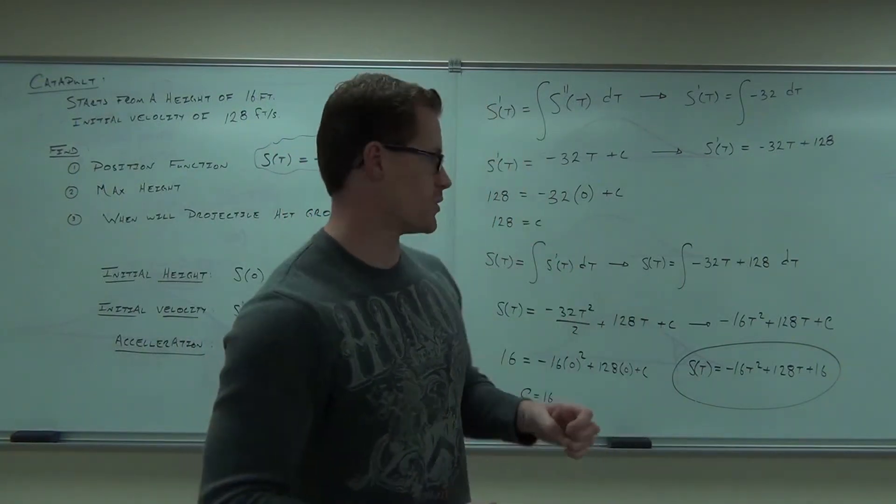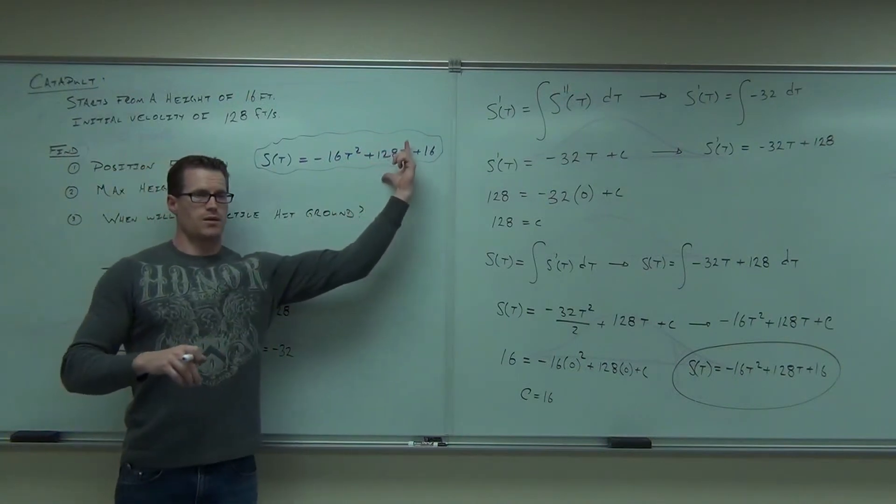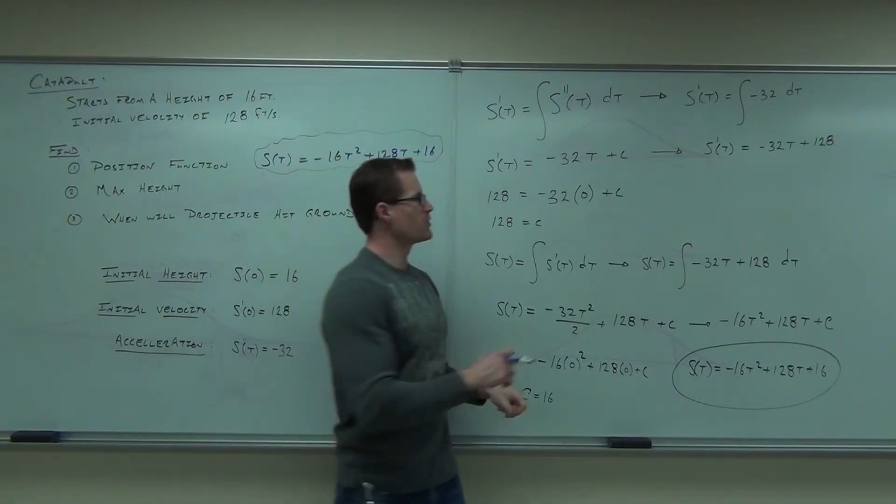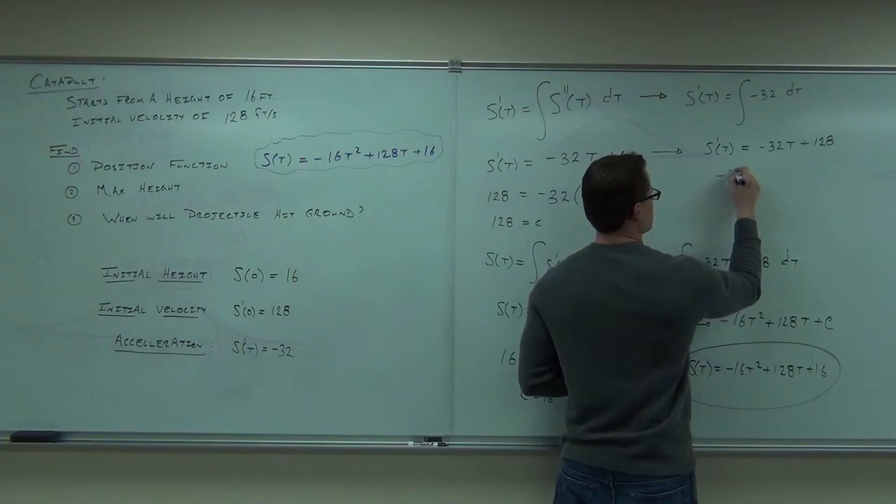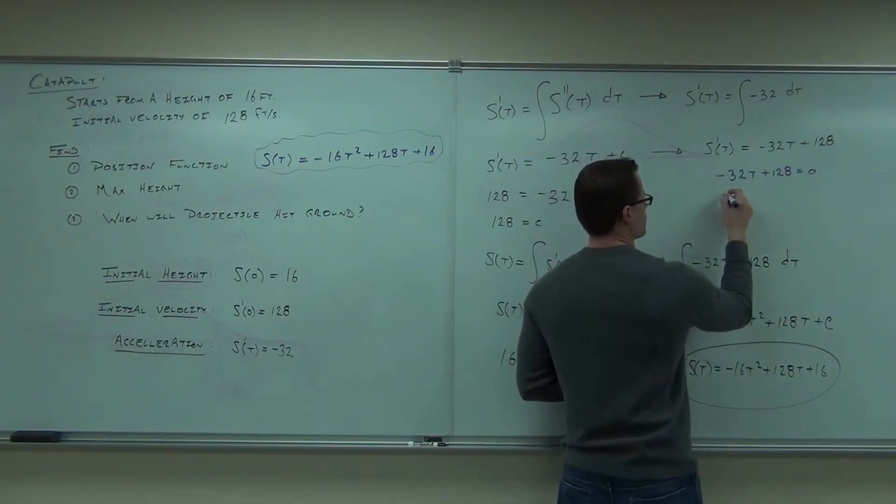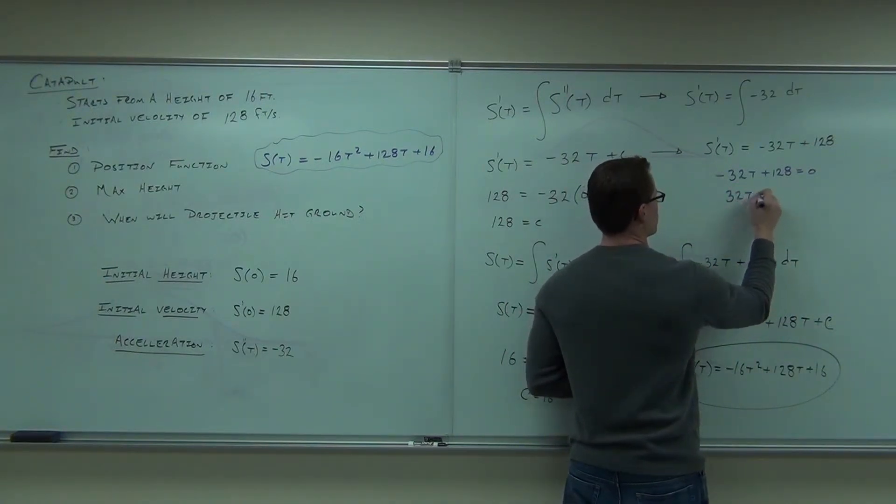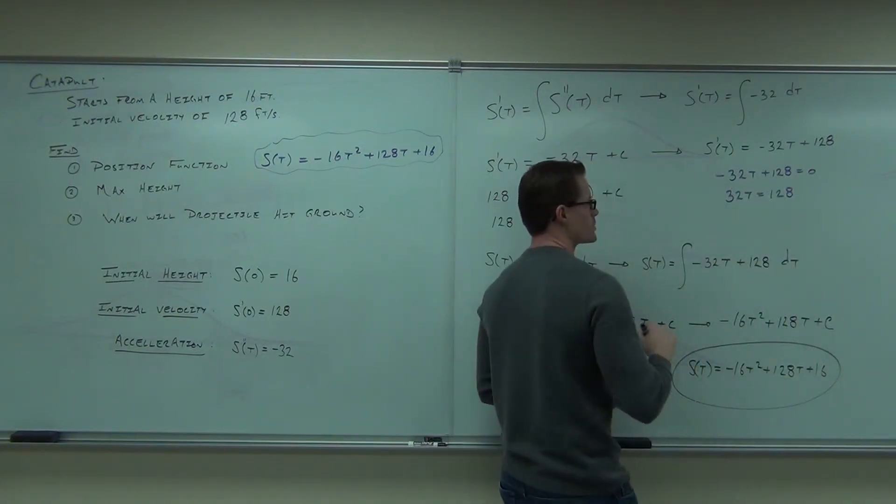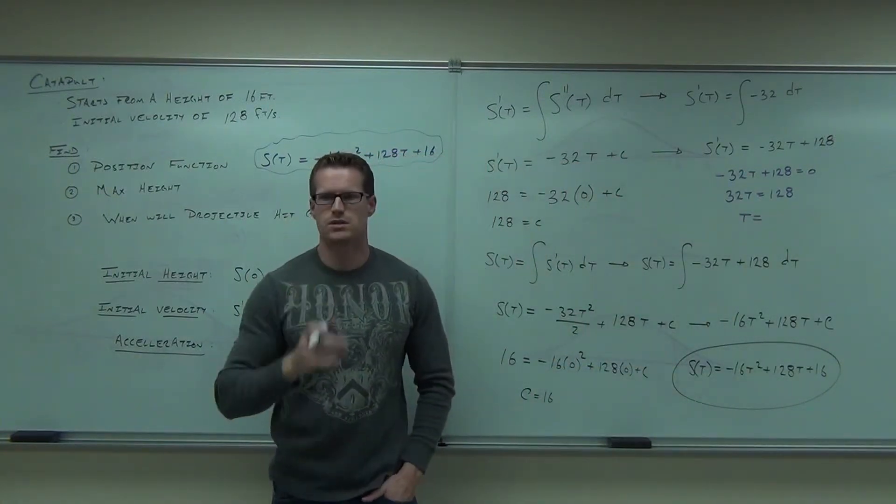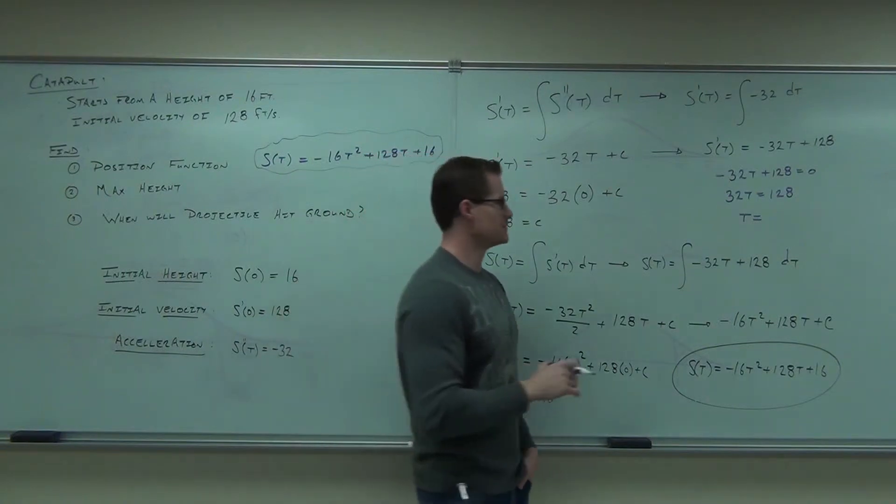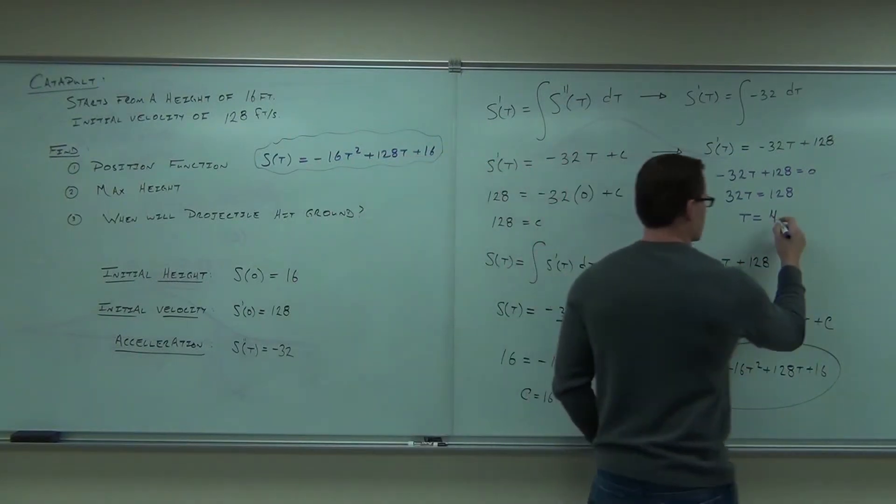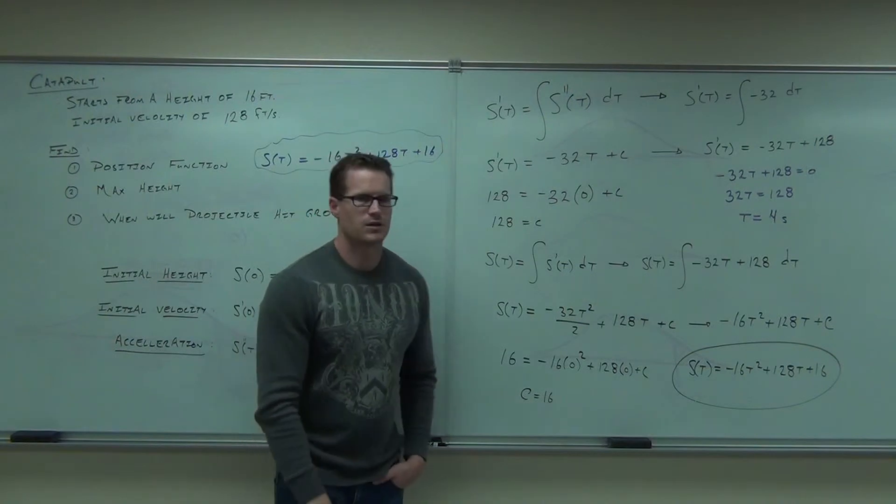When would part two happen? You set it to zero. Set what to zero? You're at the prime of t. Not the position, right? No. That would be a height. The first derivative, though, gives us the velocity. That says when it's zero, it's going to be at its peak. So if we set this equal to zero, 32t equals 128. What's t equal? If you divide 128 by 32. Exactly 4? I love it. For what? Seconds, because t is a time. Seconds.